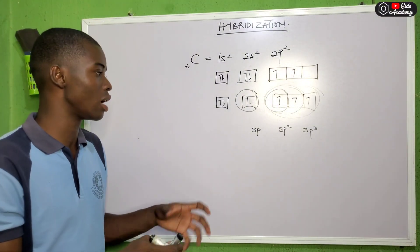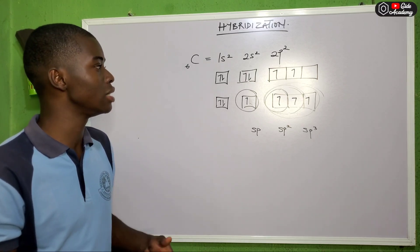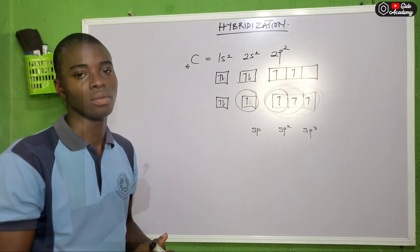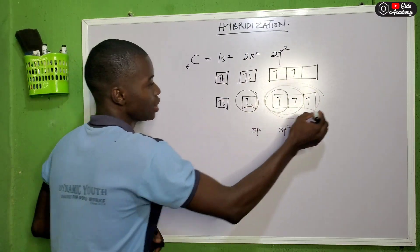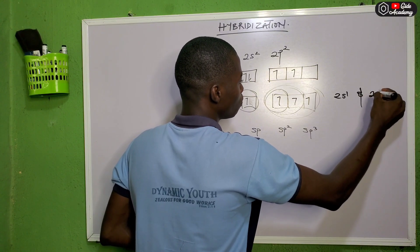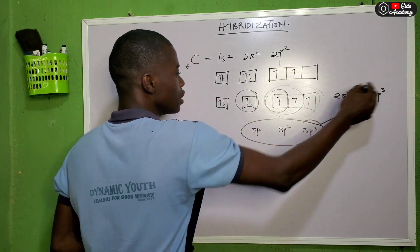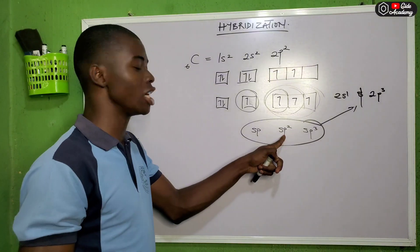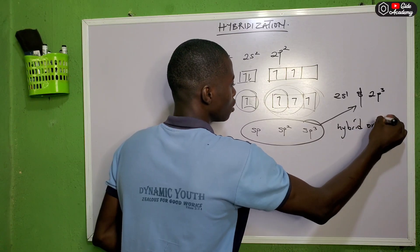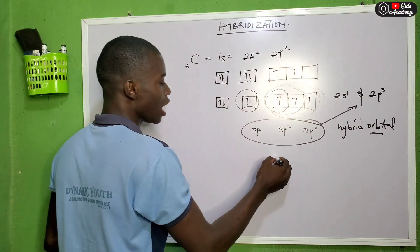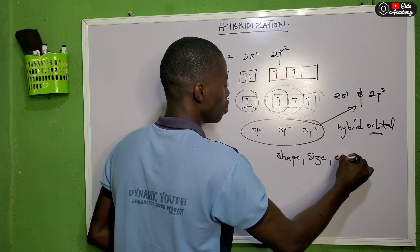Hybridization is the blending of two or more atomic orbitals to form a hybrid orbital. The orbitals that blend must have equal energy levels. For example, 2s1 blending with 2p3 gives sp3. The new orbitals formed are called hybrid orbitals, and they have similarity in terms of shape, size, and energy level.